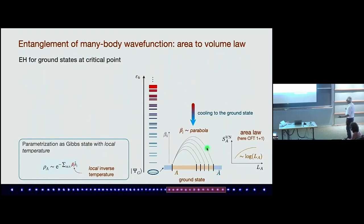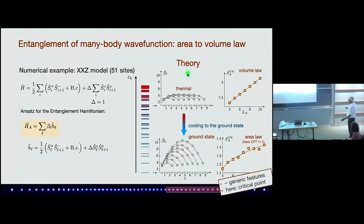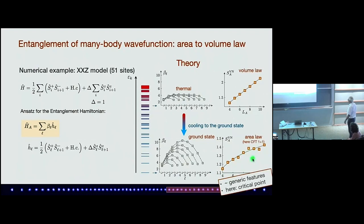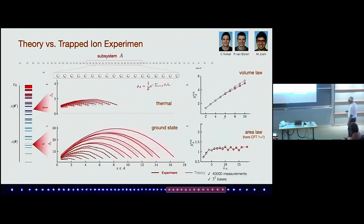Going back to the earlier slide: this is what we want to see in the CFT case. In theory, for the Heisenberg model, you can see that the thermal distribution is pretty flat, with volume-law entanglement up to system size 10, and the ground state shows the expected parabola. This would be a simulation of how we would actually measure this thing — can we see this logarithmic dependence in the experiment? Let me show the experimental result right away.